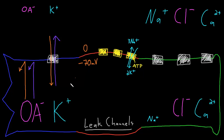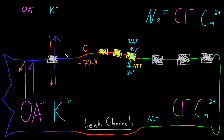The membrane potential where an ion has balanced electrical and diffusion forces so that there's no net movement of that ion across the membrane is called the equilibrium potential, also called the reversal potential. It actually doesn't take many potassium ions to exit — something like less than 1% of 1% of all potassium ions in the neuron have to leave to reach the equilibrium potential, so the effect on the intracellular concentration of potassium is negligible. This process does take a little time, since potassium can only squeeze out through the leak channels.